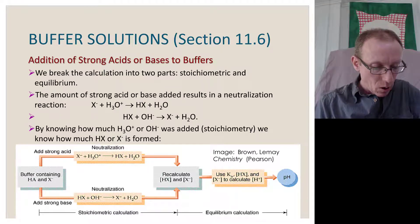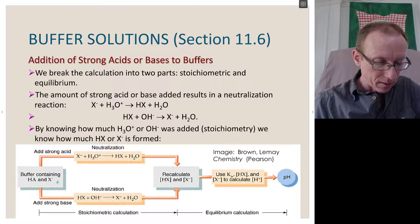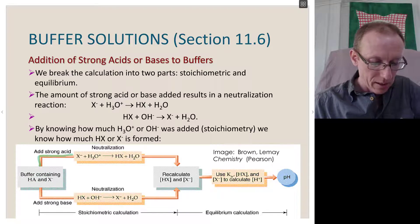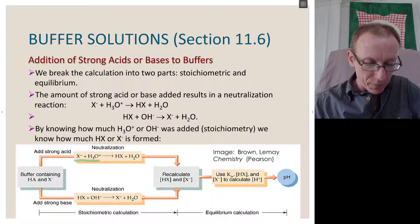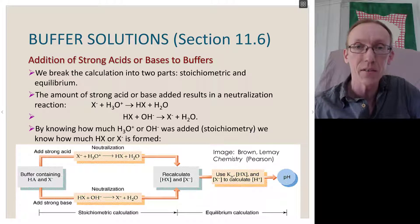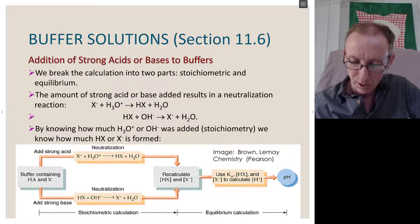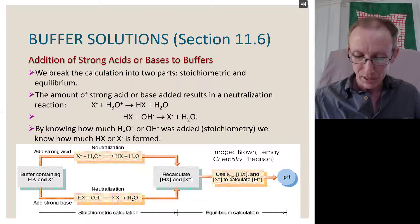Looking at this diagrammatically, we've got a buffer containing this weak acid and its conjugate base. If we add a strong acid, we're going along this route here. The neutralization will involve this equation. Then we can recalculate the amount of the weak acid and its conjugate base that we have in the solution, and we can use those values to calculate the concentration of protons, and that tells us what the pH should be.